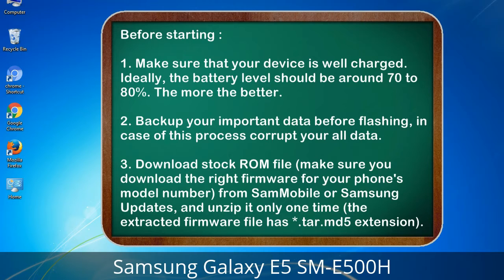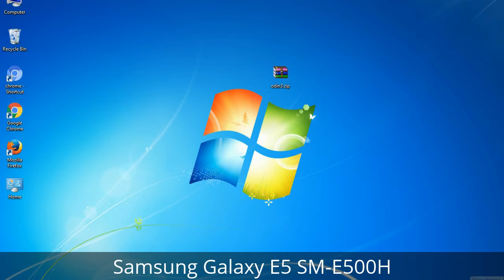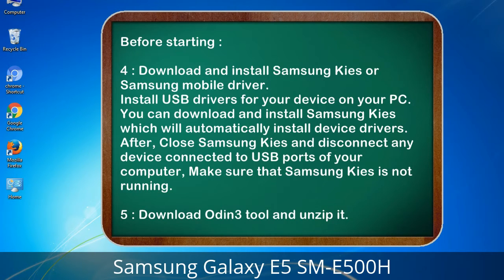3. Download the stock ROM file. Make sure you download the right firmware for your phone's model number. From Sammobile or Samsung Updates, and unzip it only one time. The extracted firmware file has a *.tar.md5 extension. 4. Download and install Samsung KIES or Samsung mobile driver to install USB drivers for your device on your PC. Samsung KIES will automatically install device drivers. After installing, close Samsung KIES and disconnect any device connected to USB ports of your computer. Make sure that Samsung KIES is not running.